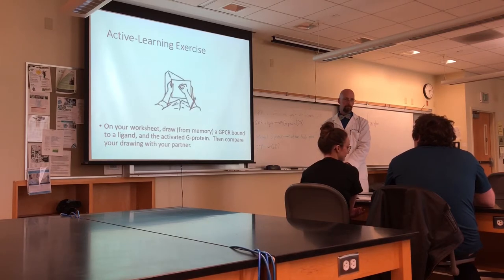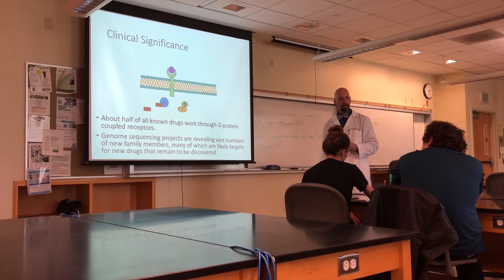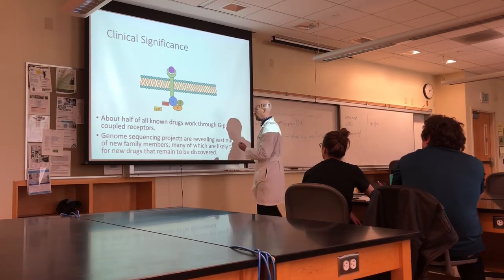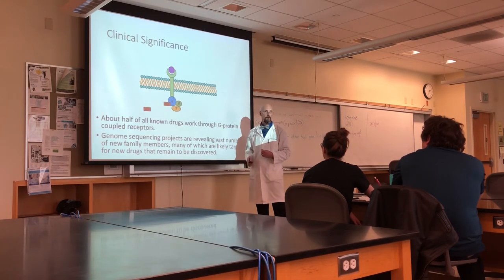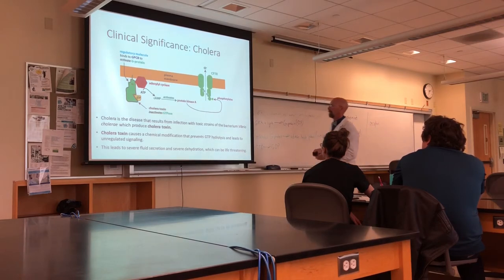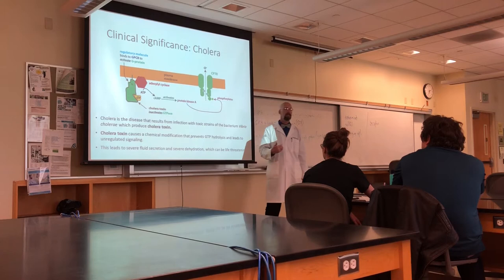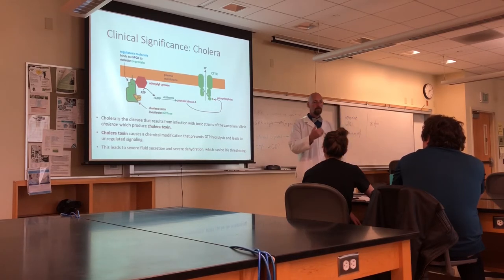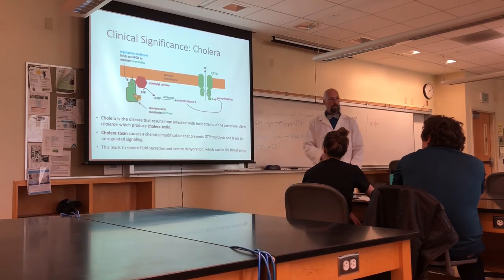Do you have any questions so far? Pretty clear. Good. The clinical significance of GPCRs includes the fact that about half of all known drugs work through G-protein coupled receptors, and gene sequencing has revealed many potential new drug targets that are GPCRs we haven't taken advantage of yet. Additionally, cholera — the pathogen Vibrio cholerae — produces a toxin known as cholera toxin, which inhibits the GTPase activity of G-proteins. If a G-protein cannot hydrolyze GTP to GDP, it can't deactivate — it's stuck in its active form, leading to fluid secretion, severe dehydration, which is potentially life-threatening.